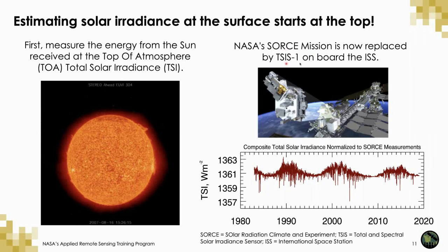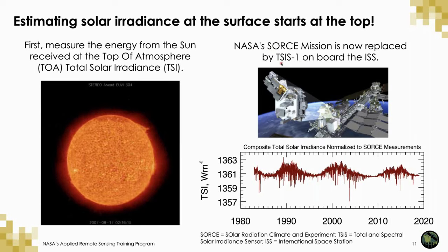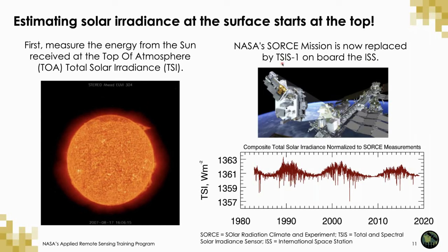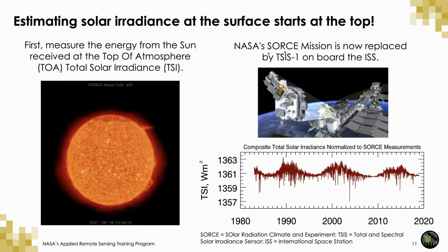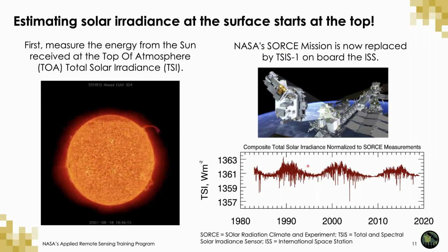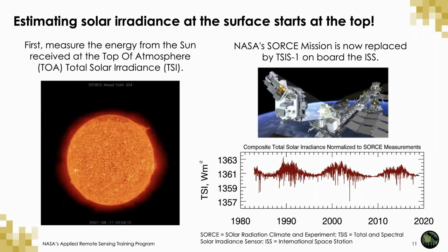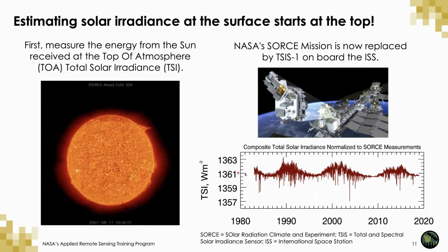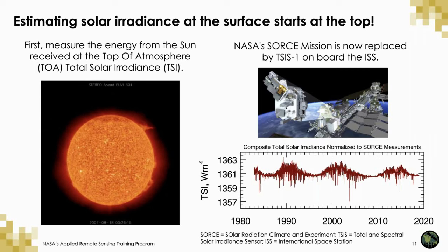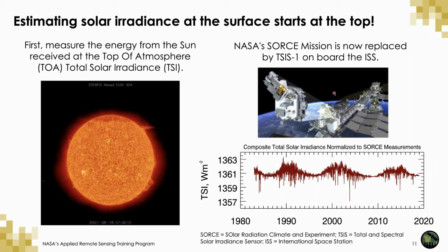The current mission is called the TSIS — Total and Spectral Solar Irradiance Sensor — onboard the International Space Station. This mission followed an earlier satellite mission called SORCE, which was recently ended in 2020. Putting those measurements together, you can see the variability of the sun over the last few decades. The amount of energy received at the top of the atmosphere is 1,361 watts per meter squared, and you can see its variability in time — a key input to our data products.